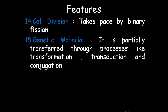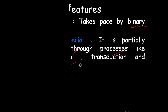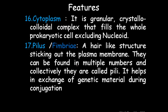Cell division mostly takes place by binary fission. Genetic material is partially transferred through processes like transformation, transduction, and conjugation — these are three processes by which genetic material is transferred from one bacterium to another. Cytoplasm is a granular crystalline colloid complex that fills the whole prokaryotic cell excluding the nucleoid. The area around the nucleoid structure and flagellum is filled with cytoplasm.